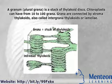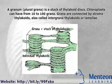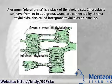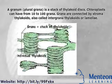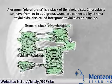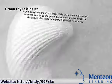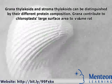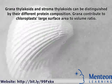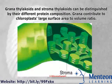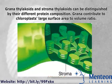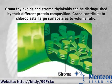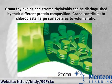Grana are connected by stromothylakoids, also called intergrana thylakoids or lamellae. Grana thylakoids and stromothylakoids can be distinguished by their different protein composition. Grana contribute to chloroplasts' large surface area to volume ratio.